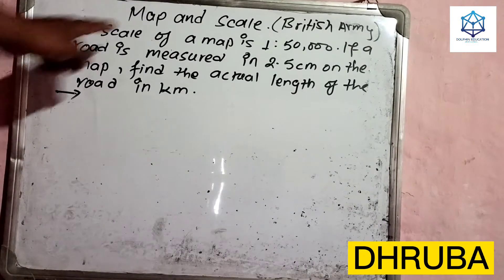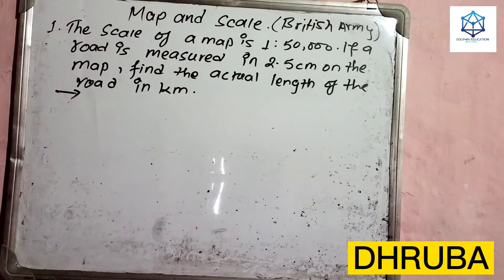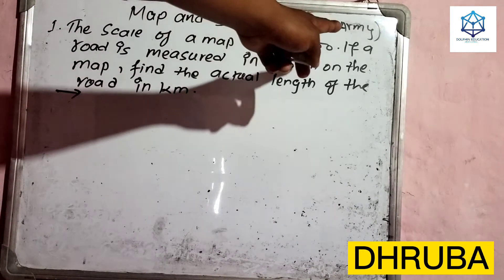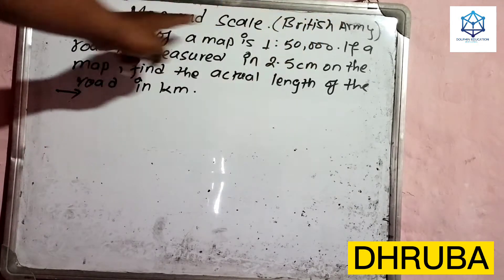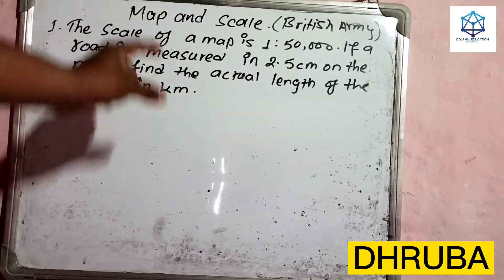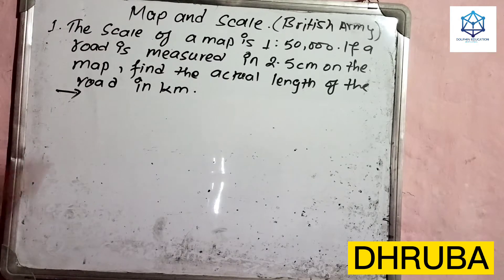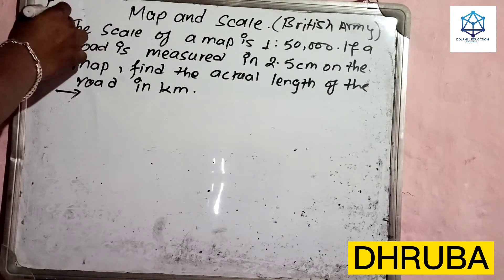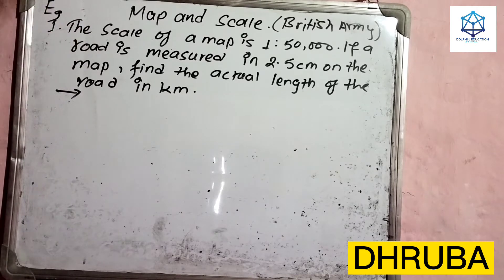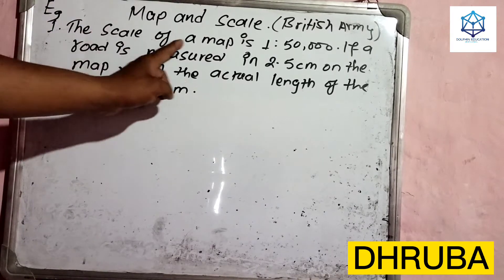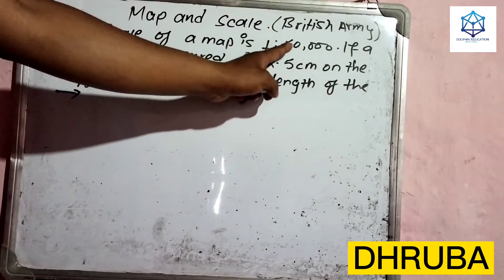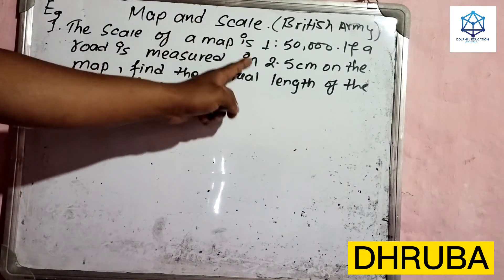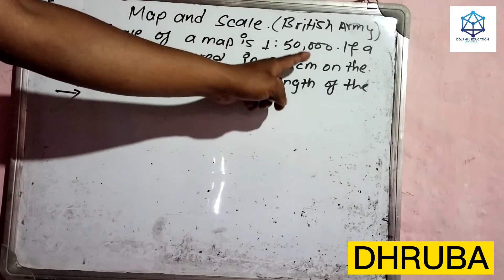I am going to get a map scale question. Example number 1: The scale of a map is 1 to 50,000. If a road is measured as 2.5 cm on the map, find the actual length of the road in kilometers.